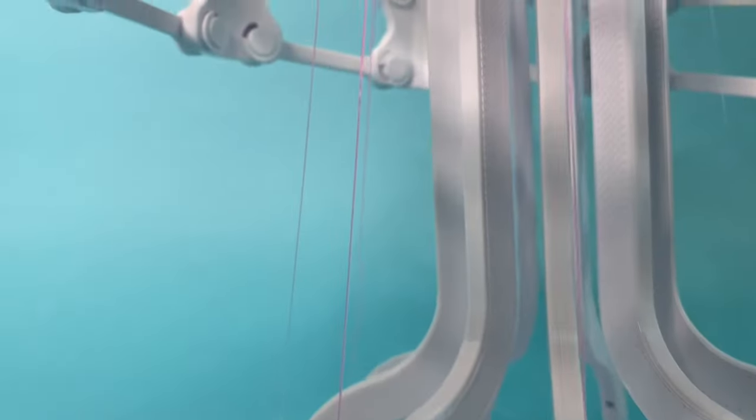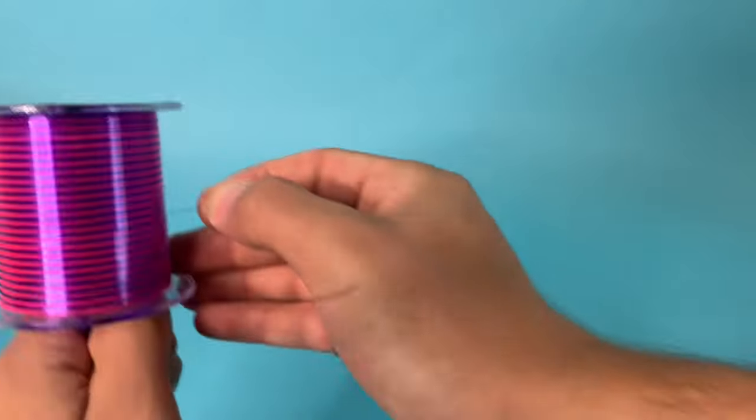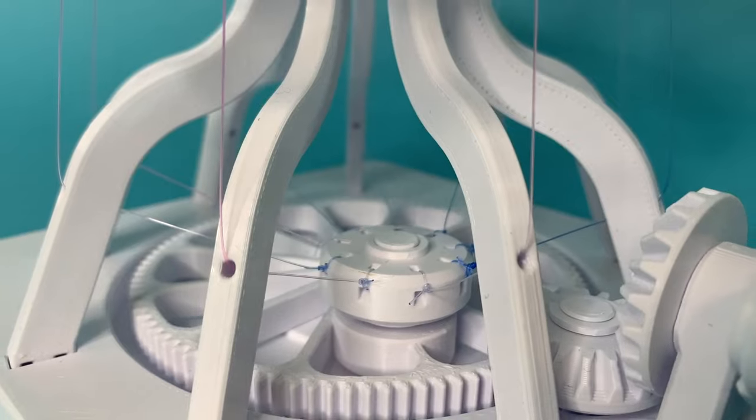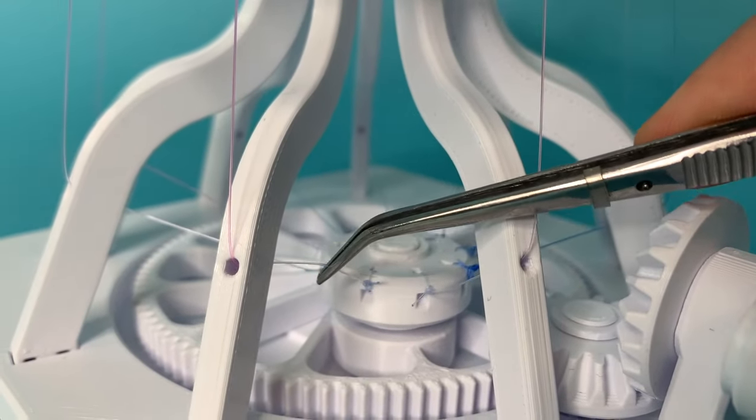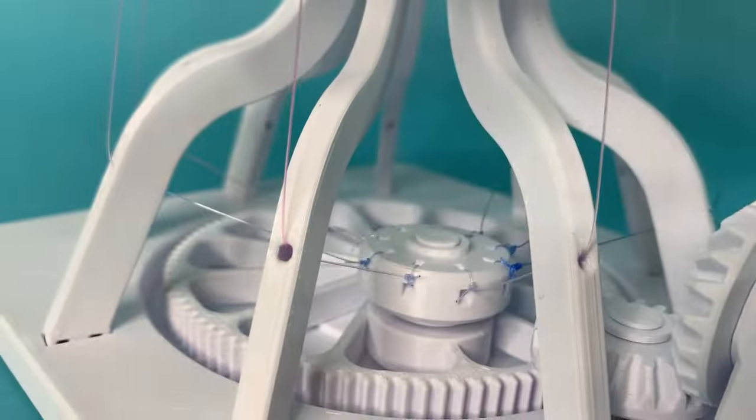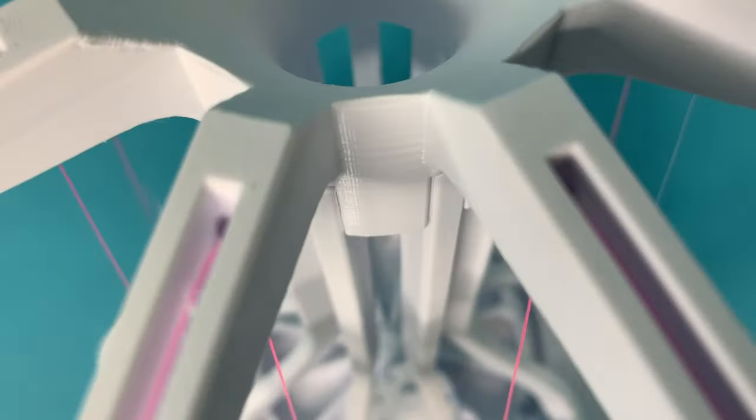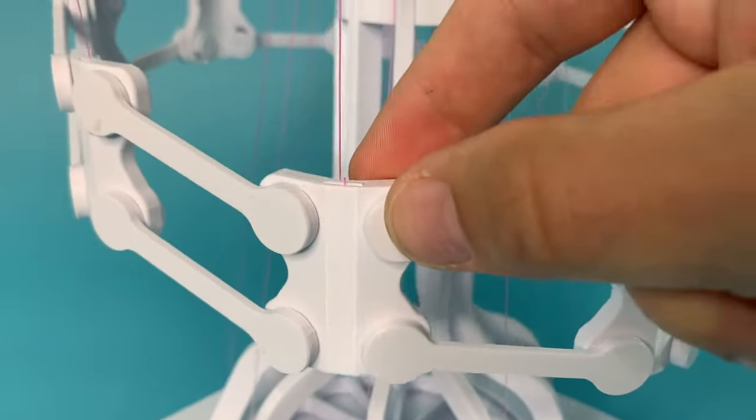Now that the gear system was working, it was time to move over to the strings. In these sculptures, I used fishing line. If we follow this one line through the sculpture, you can see it travels from the string mount through this hole, up through the top, and then connects to this hanging segment.